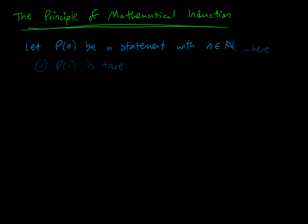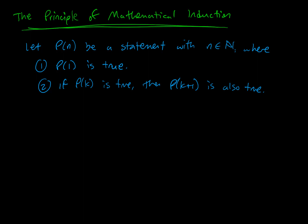There are a couple things we need to know. First, we know P of 1 is true — the first instance of our formula does work. Secondly, we know this conditional statement: if the kth iteration of our formula works, then that means the k plus 1 iteration also works. If we have those two things, then P of n is true for all n in the natural numbers.